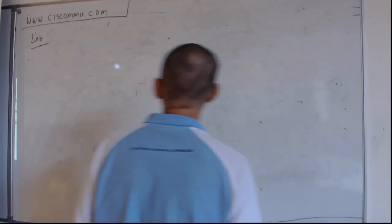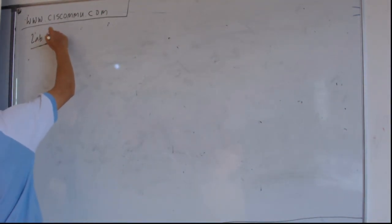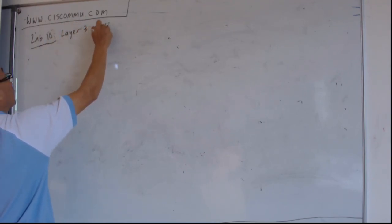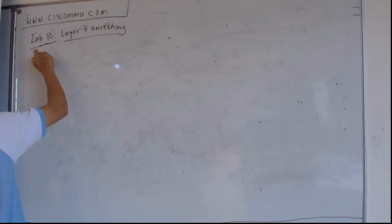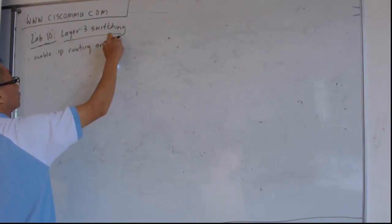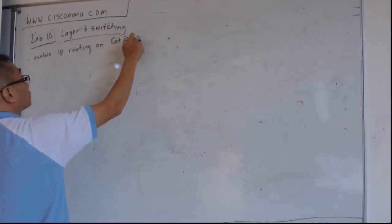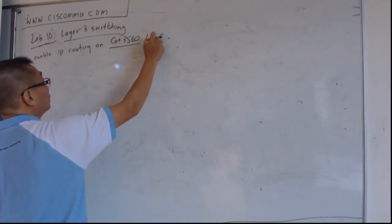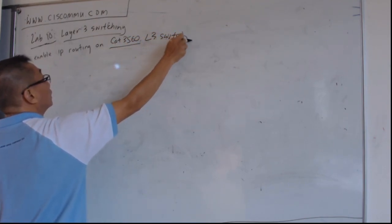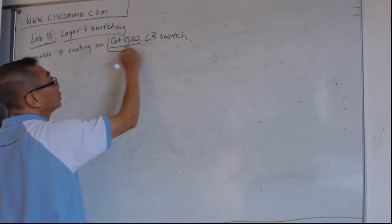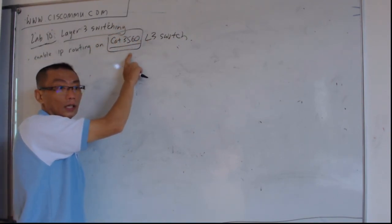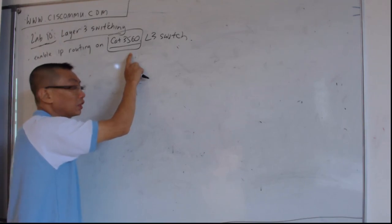Okay, lab 10 will be layer 3 switching, which means that you enable IP routing on Catalyst 3560. This is a layer 3 switch. You cannot, you must use this switch, layer 3 switch. Layer 2 switch cannot.